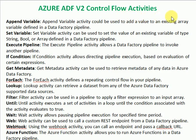Append variable is used for array type — for an existing array-defined type. Set variable is used to set some value for any type, like string, bool, or array, defined in a Data Factory pipeline. These two activities are useful when executing multiple activities and passing values between them.